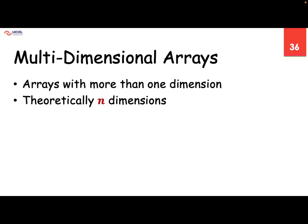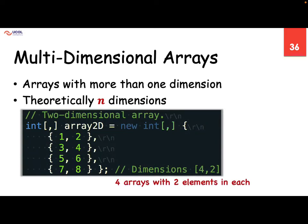So we have defined a two-dimensional array. Instead of giving one integer value, we put a comma over there and then we give two values. This is one array, this is the second array, this is the third array, this is the fourth array. So we are getting those dimensions here — they are four by two.